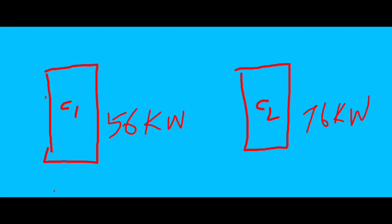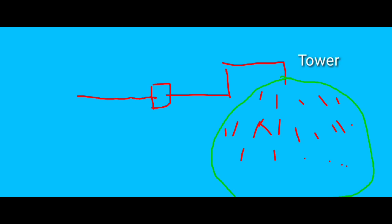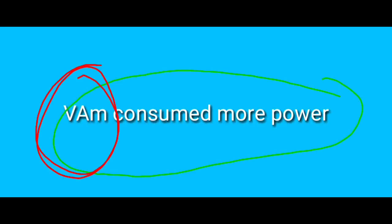So why is that? The key point is: higher the load, higher the power consumption. If you compare it with VAM, you can see the power consumed by VAM is different from centrifugal chillers.